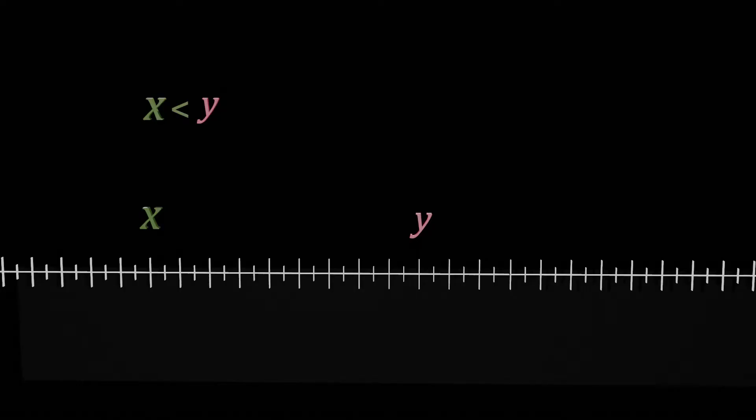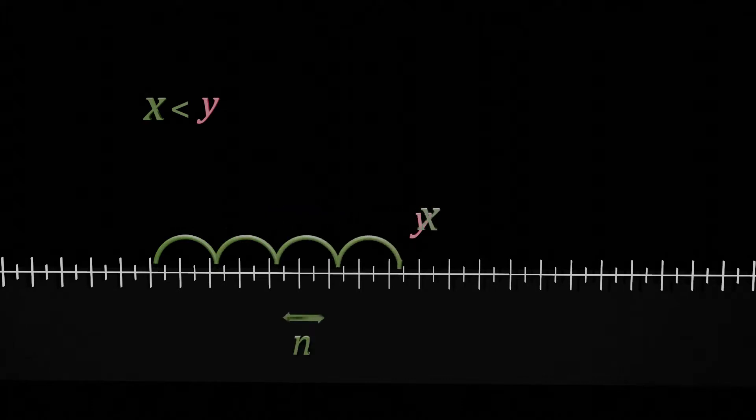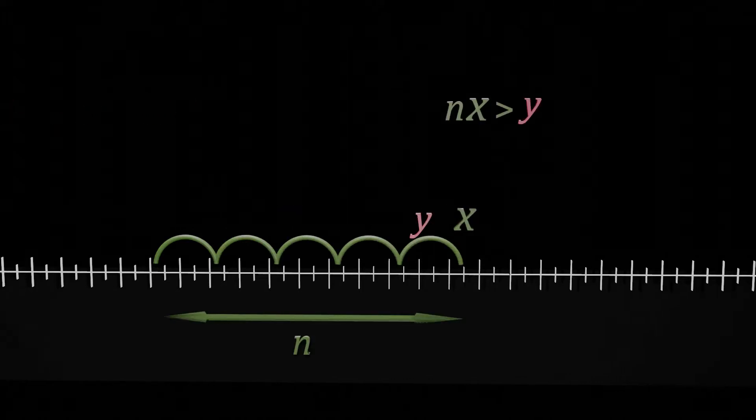The Archimedean property says that given two real numbers, you can multiply the small one by a natural number to become larger than the second one.